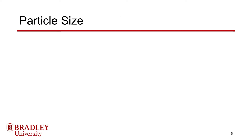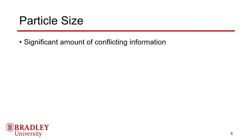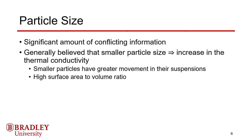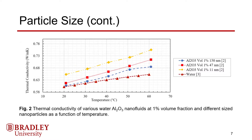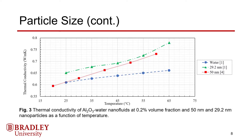Next, the effects of particle size were examined. A significant amount of conflicting information was found in existing literature, but it is generally believed that a smaller particle size gives a higher thermal conductivity. This is for two reasons: smaller particles have an easier time moving around within the nanofluid, which results in more collisions, and smaller particles also have a larger surface area to volume ratio, which facilitates more heat transfer. Shown here are sets of Al2O3 water data, which show that the smallest particle size of 11 nanometers has the highest thermal conductivity, followed by 47 nanometers and lastly 150 nanometers. Another graph also reinforces the idea, with the 29.2 nanometer nanofluid showing improvement over the 50 nanometer fluid.